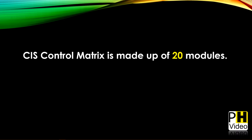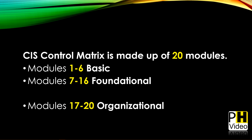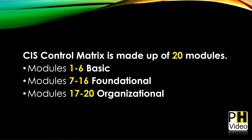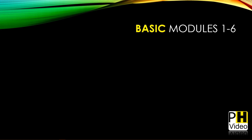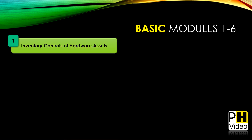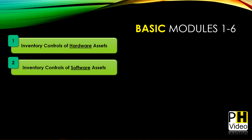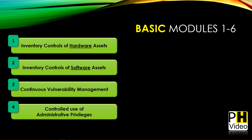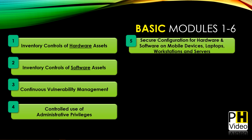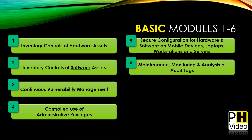With that out of the way, let's get started. The CIS control matrix is made up of 20 modules. Modules 1 through 6 are referred to as the basic set, modules 7 through 16 are foundational, and 17 through 20 are organizational. There will be a separate video going over each module in detail. The basic modules 1 through 6 cover: inventory controls for hardware assets, inventory controls for software assets, continuous vulnerability management, controlled use of administrative privileges, secure configuration for hardware and software on mobile devices, laptops, workstations, and servers, and maintenance, monitoring, and analysis of audit logs.